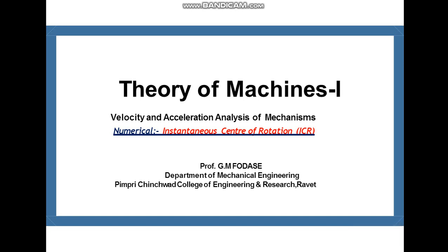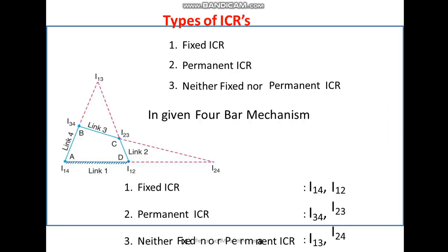Let's start with the lecture on the ICR method. In this lecture we are going to discuss a numerical on the ICR method, and before that we will discuss the basics of ICR method. When we consider a four-bar mechanism as shown in the figure, link number one is fixed, link two is the crank, three is the coupler, and link four is the follower. To find out the velocities and accelerations of these links, different methods are used, and the first method we are going to discuss is the ICR method.